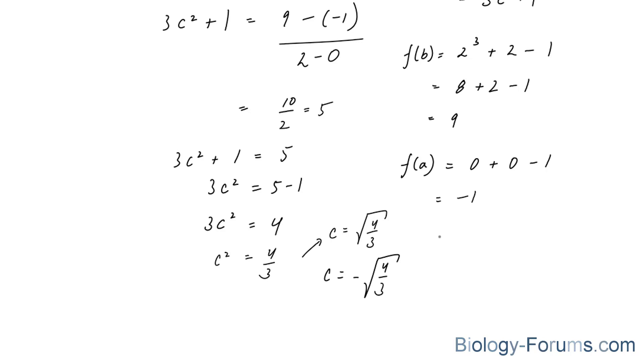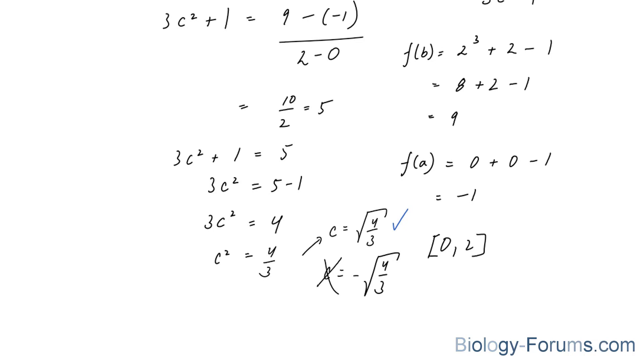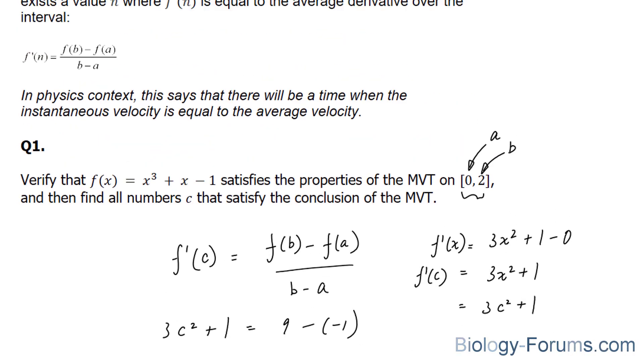Now, keep in mind your intervals. Your intervals stretched from 0 to 2. Since this is outside of 0 and 2, you cannot include that as your c value. This is your only valid c value. So there you have it. That is how to use the mean value theorem in calculus.